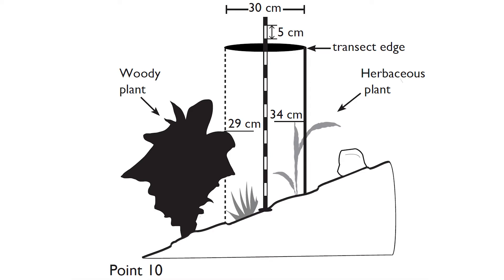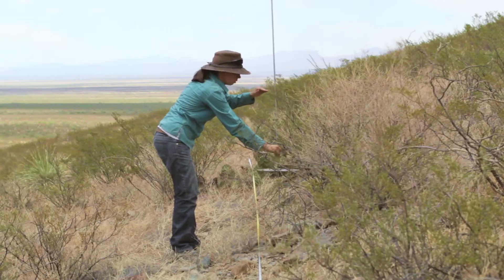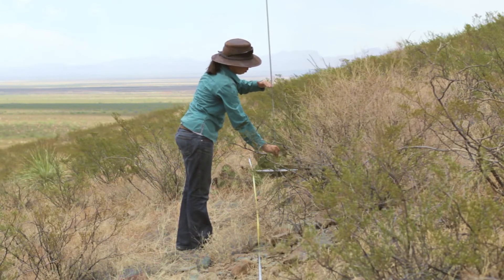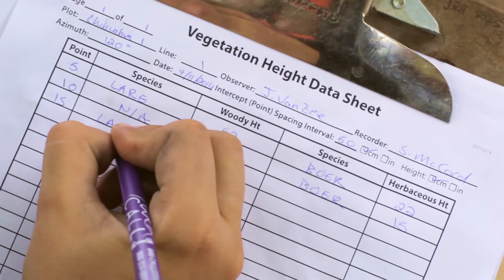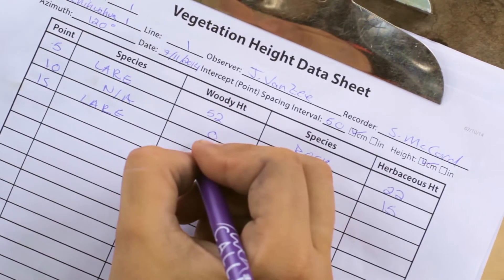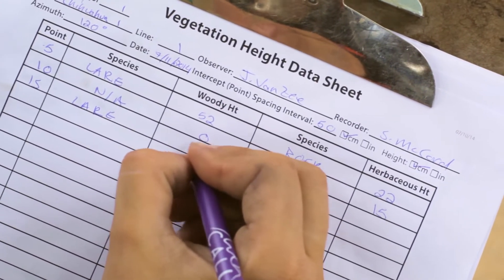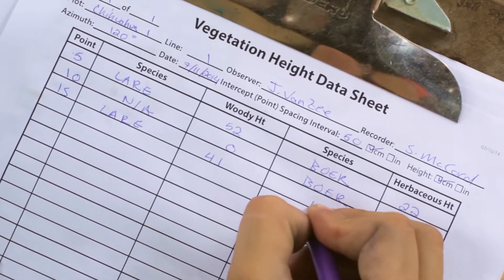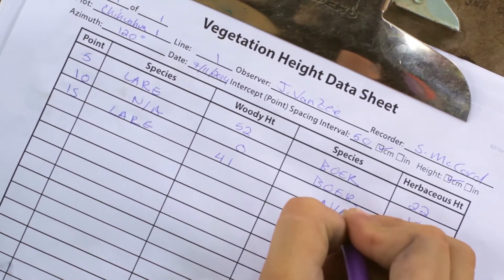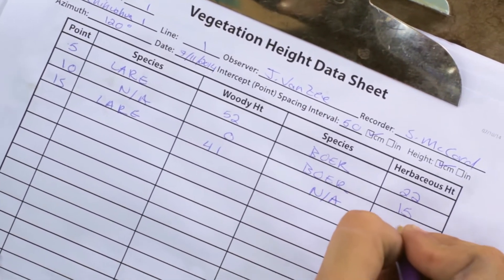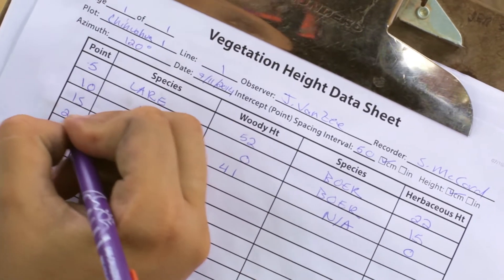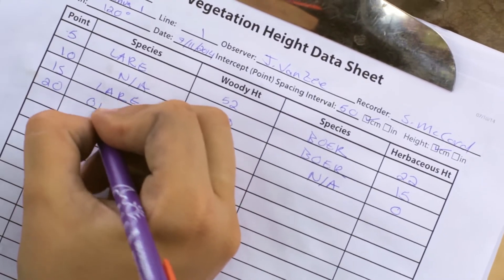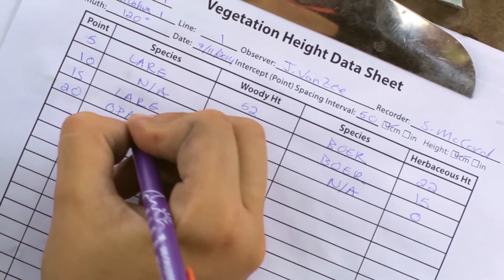If no vegetation is present, record a zero for both woody and herbaceous heights. If only woody vegetation is present, record its height and a zero for herbaceous height. If only herbaceous vegetation is present, record its height and a zero for woody height.